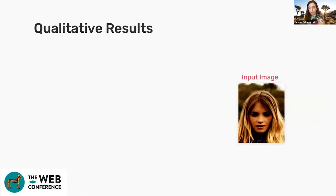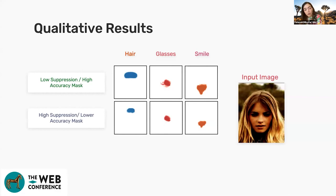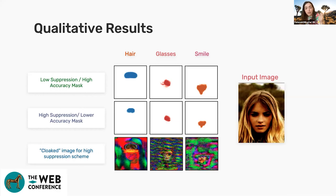Here are some qualitative results. The first row shows the important remaining features for different tasks. If you're looking at hair, glasses, or smile, what the model looks at makes sense: for hair, it was looking at the top of the person's head; for glasses, the eyes; and for smile, the lips. You can push the model further to lose a bit more accuracy but get fewer features. When we actually suppress these values with constant numbers, you end up with something that shows the hair and eyes but you can't really get anything more out of it.